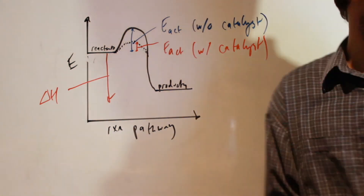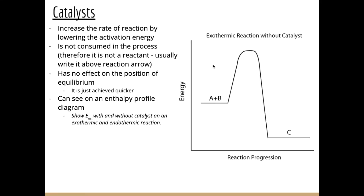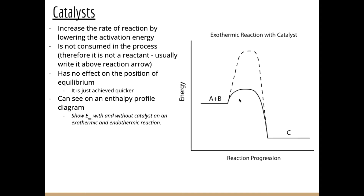To show this on a diagram: we have an exothermic reaction with reactants forming products, and a very high activation energy when we don't have a catalyst. With the addition of a catalyst, that activation energy decreases. The dotted line shows the previous activation energy; with the catalyst, we reduce the activation energy and the reaction can occur a lot quicker.